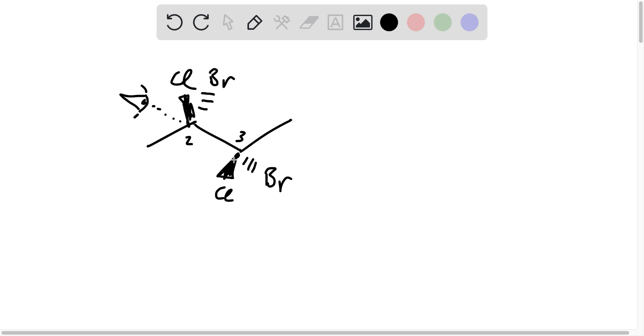And we need to indicate the correct placement of the substituents on the following projection. So I'm going to draw that projection off to the side. I recall that this first little triangle is going to correspond to this carbon.